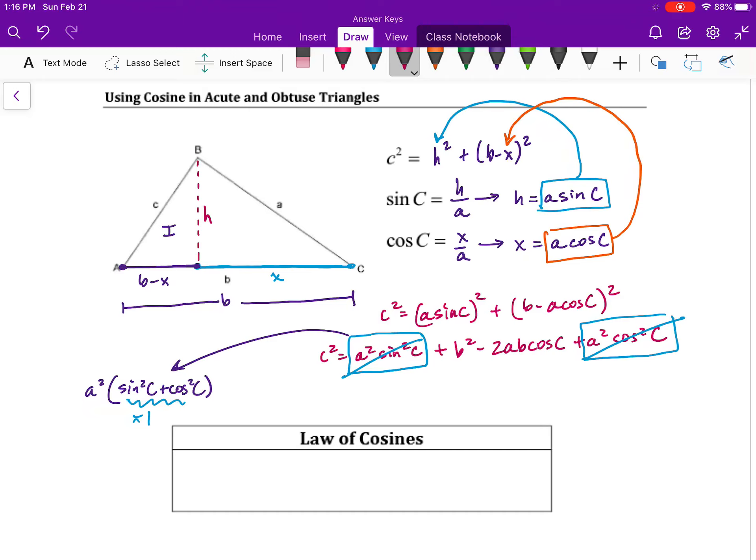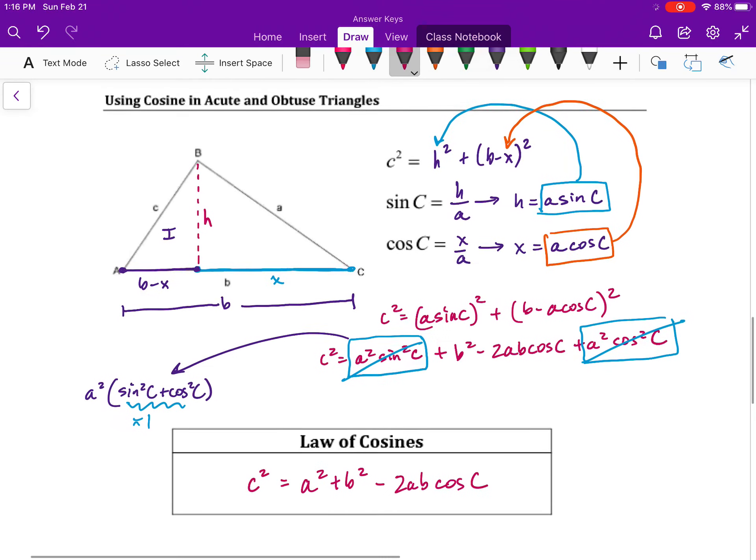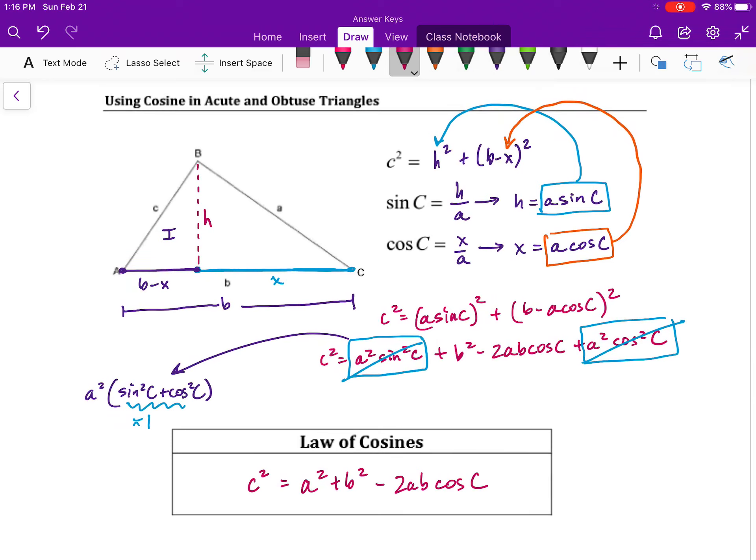Giving us our final form and the rule that we're going to refer to as law of cosines. C squared is equal to A squared plus B squared. Notice how similar that looks to the Pythagorean theorem minus 2AB cosine of C. And we have another formula that allows us to use cosine this time on a triangle that is not a right triangle.